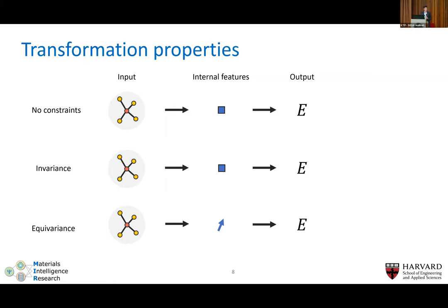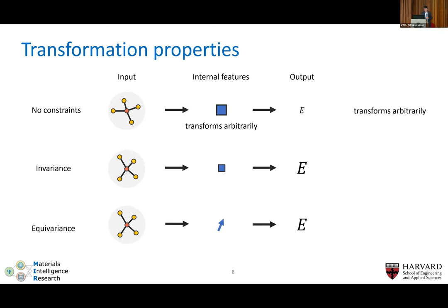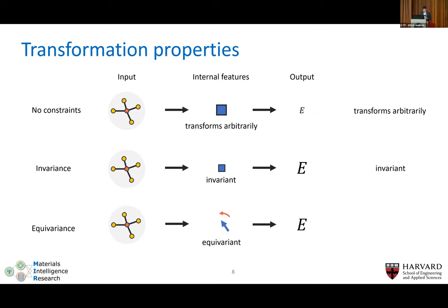There are various ways of building models. Your features can satisfy symmetries or not. You want the energy to satisfy these symmetries, but the features can be either invariant — they don't change at all when you rotate the structure — or equivariant, which is richer: as you rotate the structure in 3D, your features also rotate. This encodes more information about symmetry behavior. Equivariance technically means you commute with a linear operation of the symmetry group.